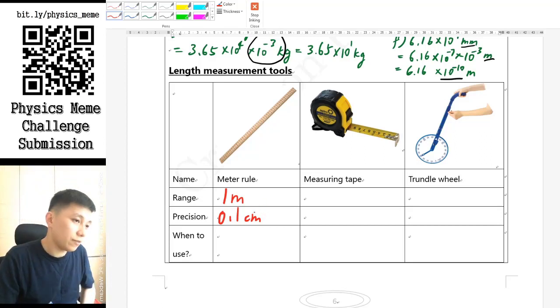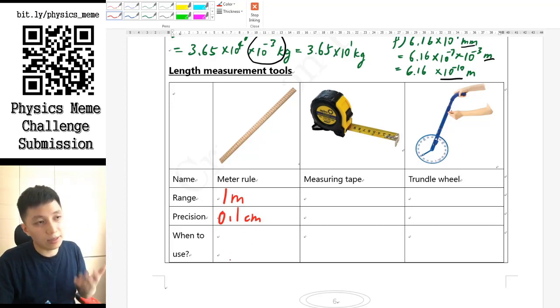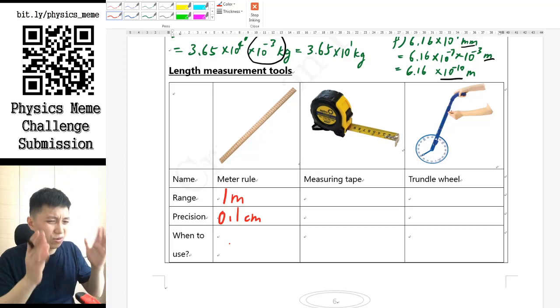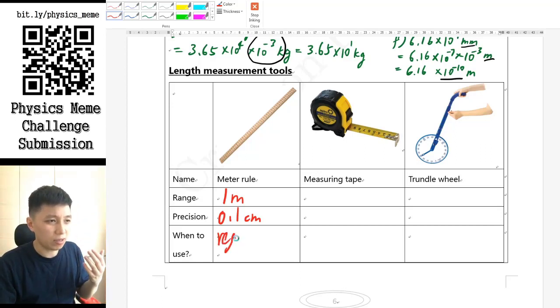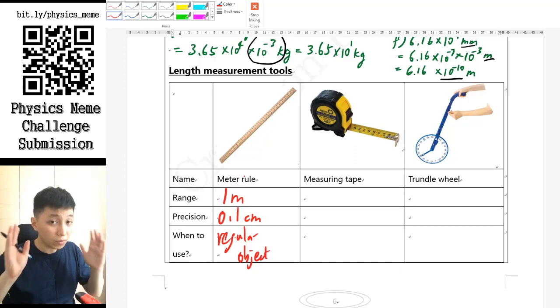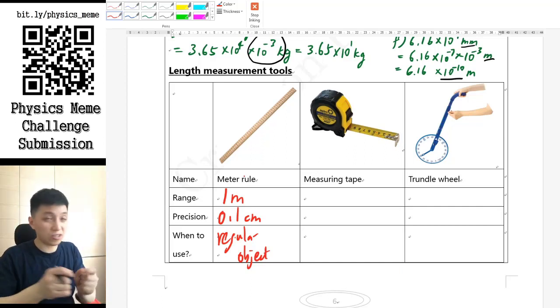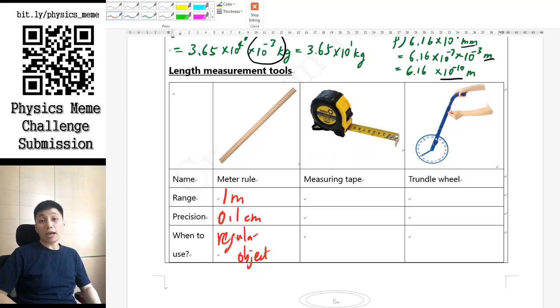As for the time when we will use it, I would say for most of the time when we measure objects, of course, that is within one meter first of all, and also really some more regular objects. Because this is more like using for measuring a certain distance when in your experiment, or the distance of a string, etc. So for things like that are rounded or much longer, then you obviously cannot use a meter ruler to measure. So for the other two questions, I'll leave it to you now. Please try it out. Pause the video, continue the video after you finish it.